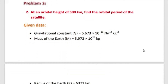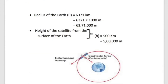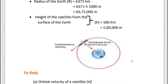Problem number 2: At an orbital height of 500 km, find the orbital period of the satellite. Orbital period means the time period of the satellite — the time taken by a satellite to complete one revolution around the Earth. The time period formula is T = distance / orbital velocity = 2πr / V, where 2πr is the circumference of the circular orbit.